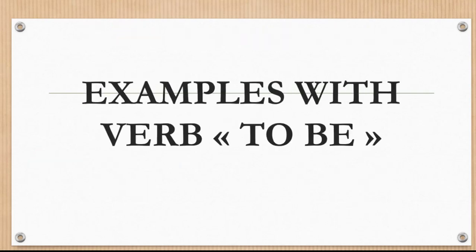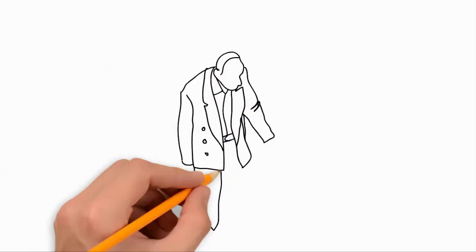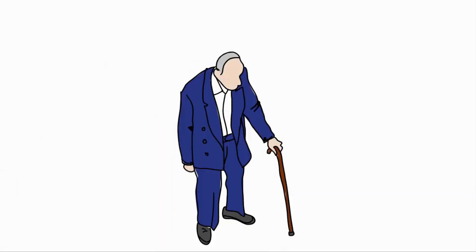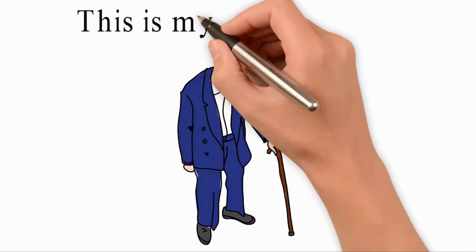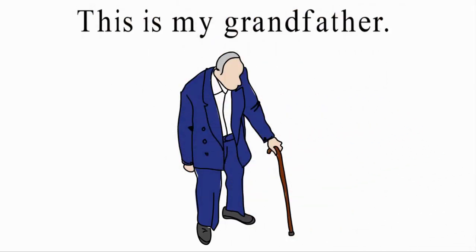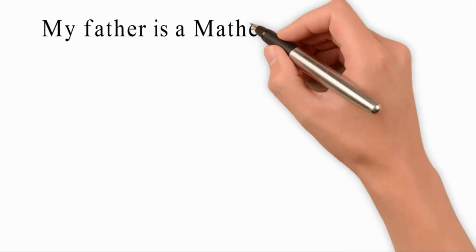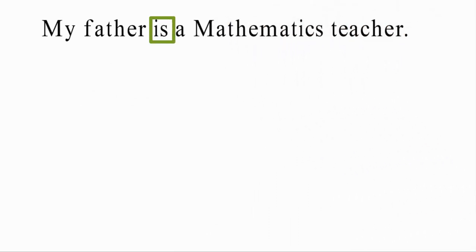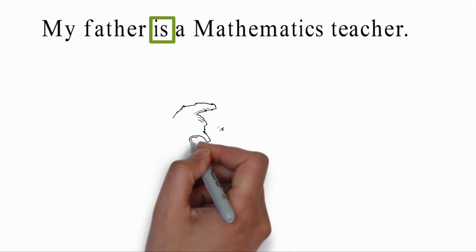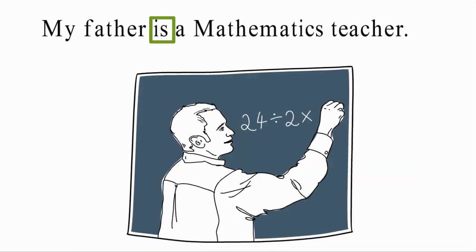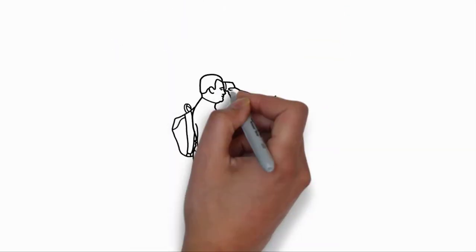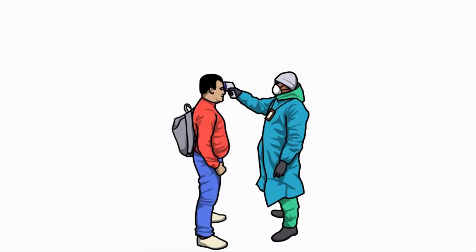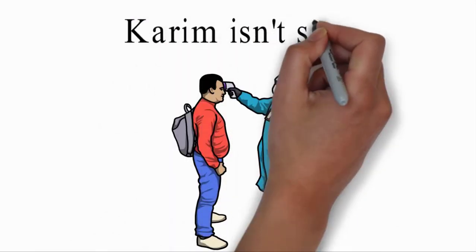Examples with verb to be. This is my grandfather. My father is a mathematics teacher. Karim isn't sick.